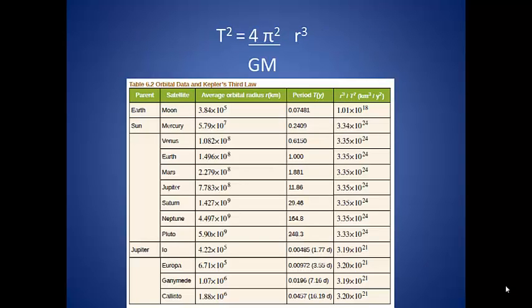So the beautiful thing about this equation is that it holds true for every body in our solar system. Check out this table in your textbook. Pick any of those bodies in a satellite. This ratio will let you predict the orbit of any of them.